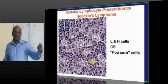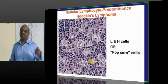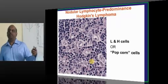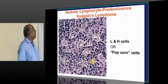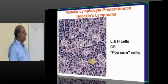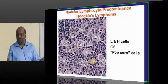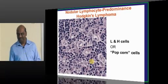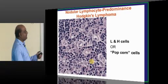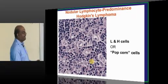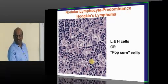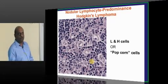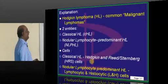There are various varieties: nodular sclerosis type, lymphocyte depleted, and lymphocyte predominant type. Only in the lymphocyte predominant type will there be types of lymphocytes — some are L type, some are H type. Histiocytic type, lymphocytic type — popcorn cells are the ones which you need to remember.